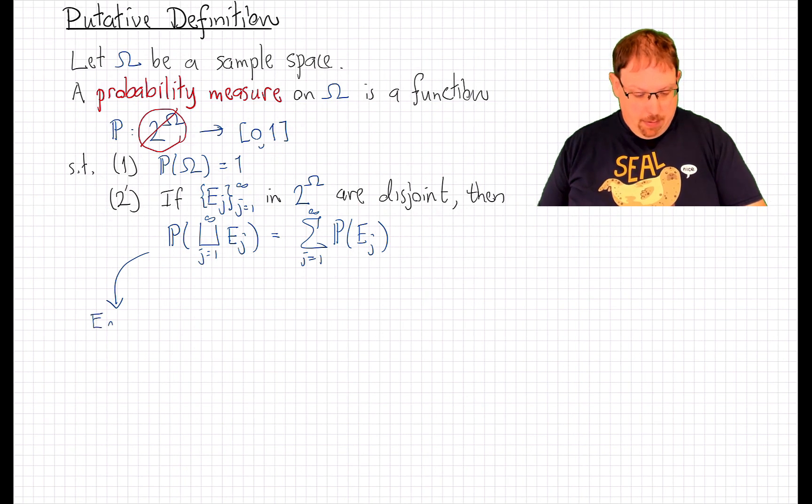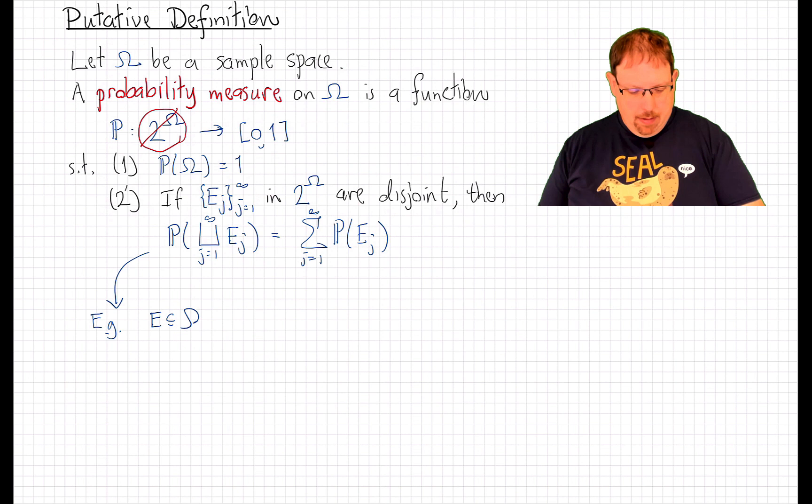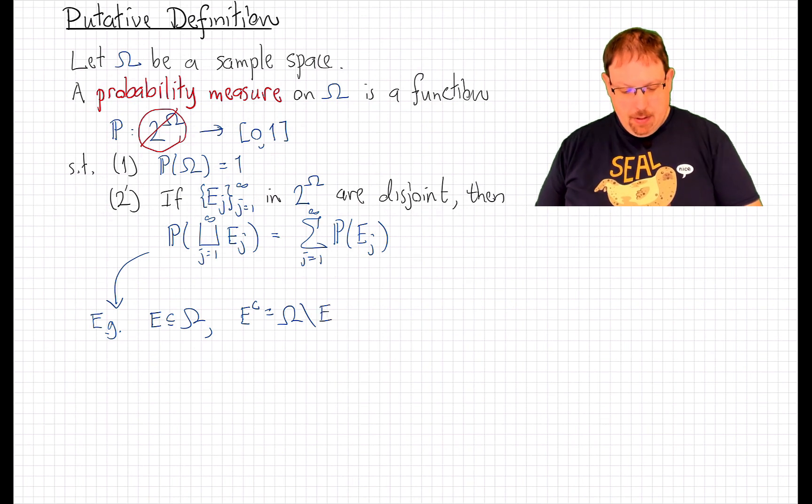let's look again at some simple consequences of countable or even finite additivity. For example, if I take any event and look at its complement, also written as omega minus E,